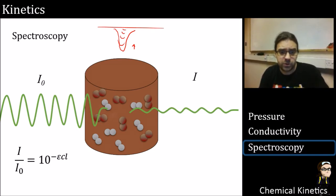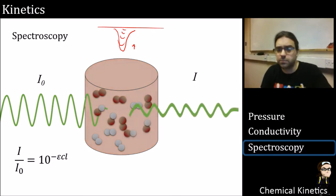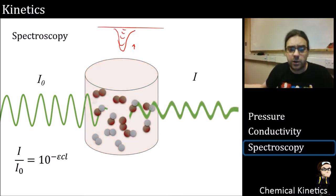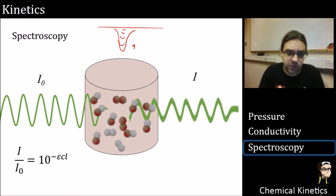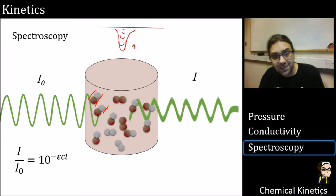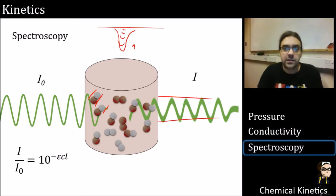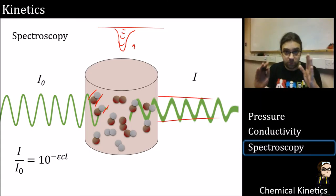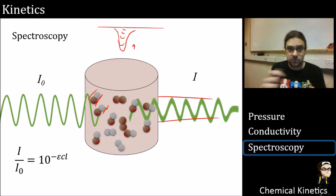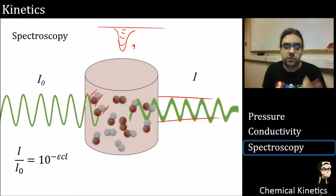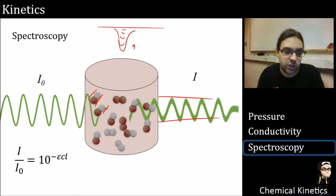You can see all the bromines disappearing and converting to HBr, and the intensity of the transmitted light is increasing. The wavelength isn't shifting — it's just the intensity that's changing. This comes down to something called the Beer-Lambert Law.